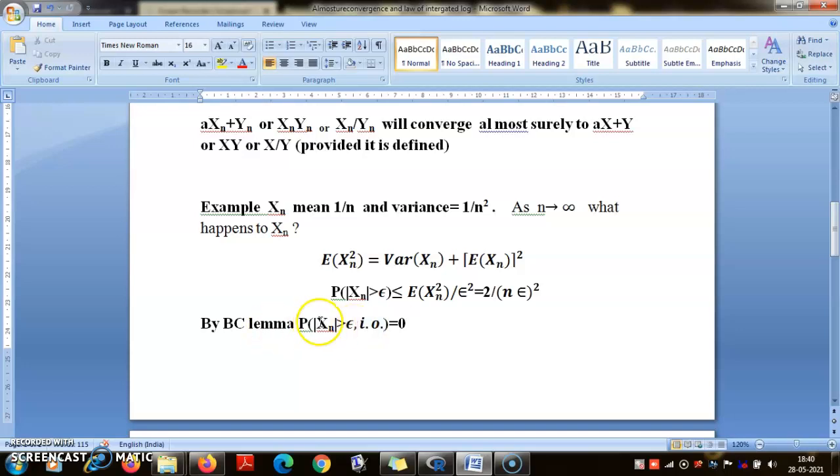This is an equivalent condition for the definition of almost sure convergence. Where does Xn converge to? Here you see it converges to zero. Recall that Xn converges to X almost surely if P(|Xn - X| > ε infinitely often) = 0 for any arbitrary ε.